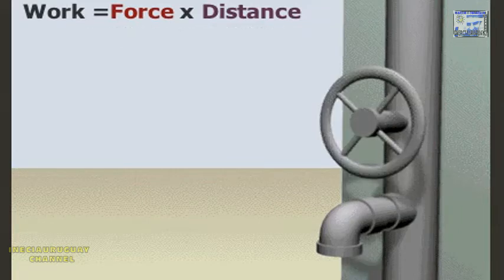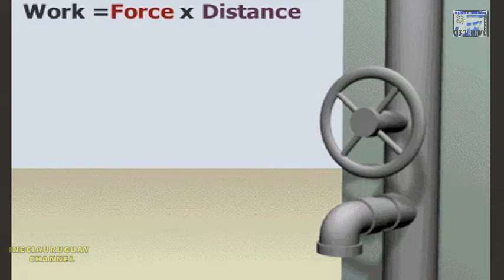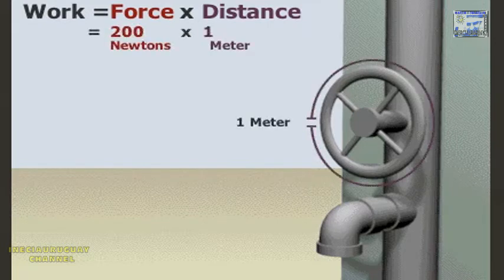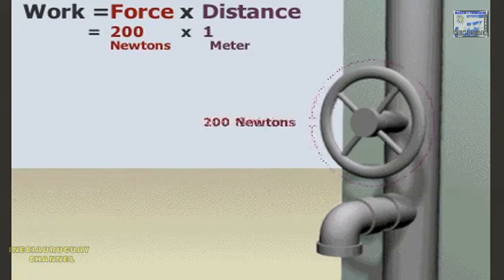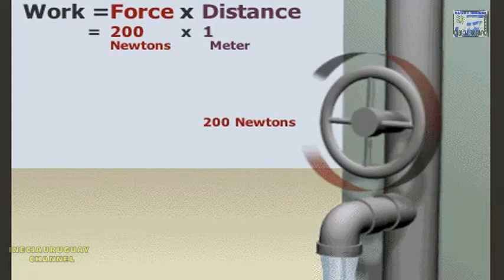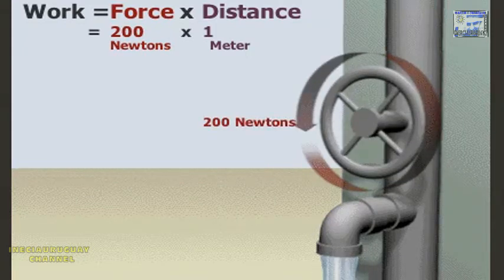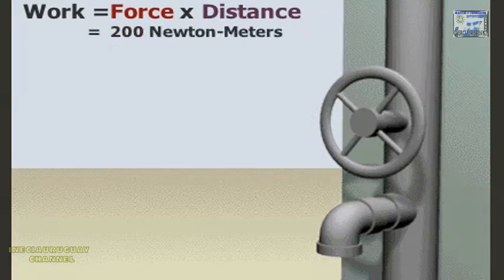With this wheel attached, doing the same amount of work will be easier. By turning the outer edge of the wheel 1 meter, using 200 newtons of force, you turn the axle 10 centimeters and get the same amount of work done.